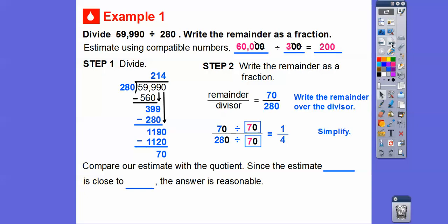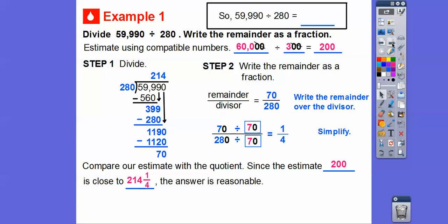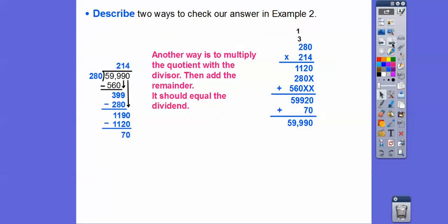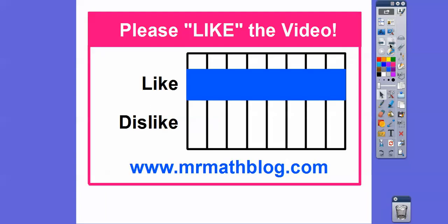Let's compare our estimate with the quotient. Our estimate was 200, which is close to our quotient of 214 and 1 fourth — so our answer is a reasonable answer. Describe two ways to check: one is comparing the estimate with the quotient. Another way is to multiply the quotient by the divisor — that gives us 59,920 — then add the remainder of 70, and we should get our dividend of 59,990, and check it out, we do. I hope you guys have a fantastic year and good luck!